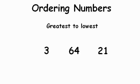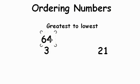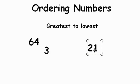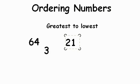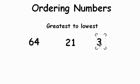Now we're going to look at ordering the numbers from greatest to least. We have the numbers three, sixty-four, twenty-one. Which is the greatest or largest number? You're right, sixty-four. Sixty-four would go first because it's the greatest. Which number would come next, going from greatest to least? So which is the next smallest? You're right, twenty-one is smaller than sixty-four but greater than three. So what number is the least? You're right, three. So three is going to come last: sixty-four, twenty-one, three — greatest to lowest, which means also the biggest number to the smallest number.